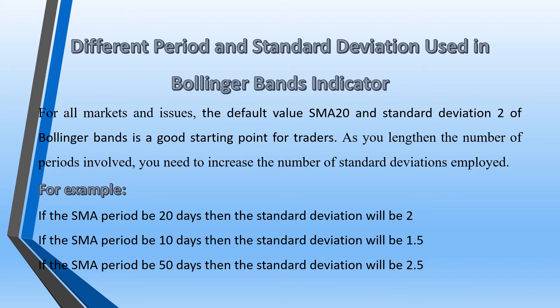Different periods and standard deviations are used in the Bollinger Band indicator. For all markets and issues, the default value of SMA-20 and standard deviation of 2 is a good starting point for traders. As you lengthen the number of periods involved, you need to increase the number of standard deviations employed. For example, if the SMA period is 20 days, then the standard deviation will be 2. If the SMA period is 50 days, then the standard deviation will be 2.5.